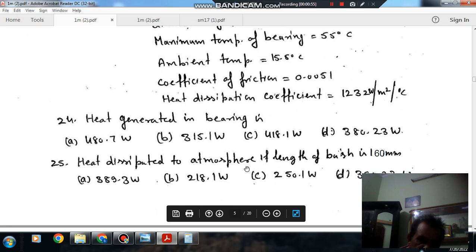Question number 25 is heat dissipated to the atmosphere temperature. If the length of the bush is 160 mm, option A 389.3 Watt, option B 218.1 Watt, option C 2.3.1 Watt, option D 380.23 Watt.